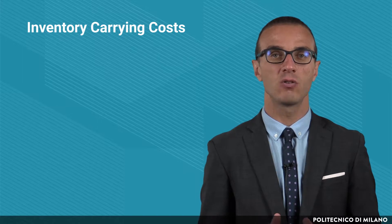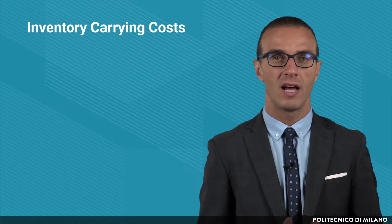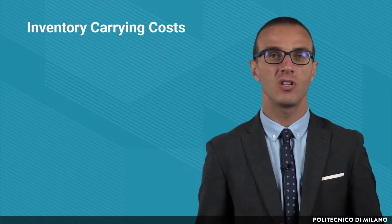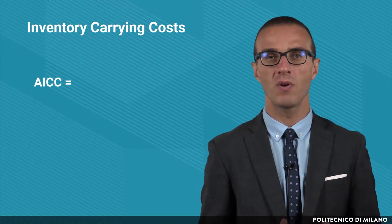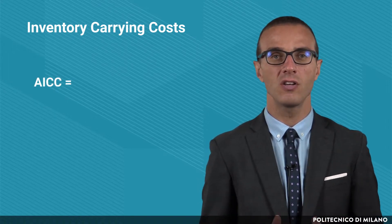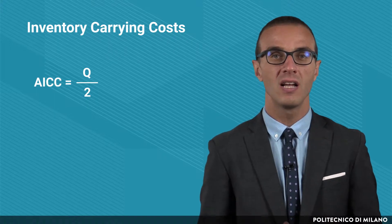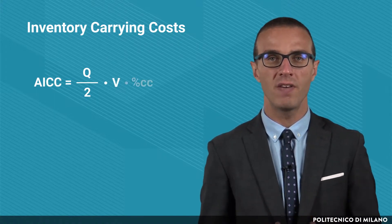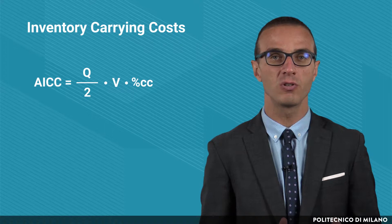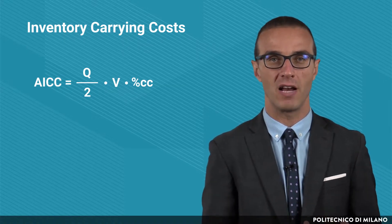First, the inventory carrying cost is the cost for keeping the products in the warehouse. Under the assumption that there are no safety stocks, the annual inventory carrying cost is calculated as the product among the cycle stocks, the unitary value of the item, and the inventory carrying cost expressed as a percentage of the item value.